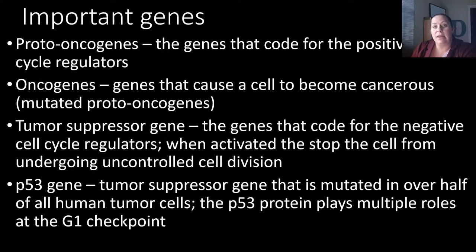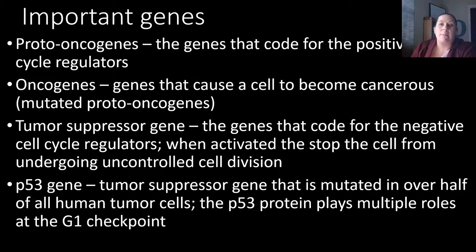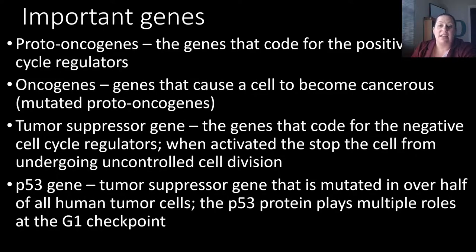There are also tumor suppressor genes that code for negative cell cycle regulators. When activated, they stop the cell cycle from undergoing uncontrolled cell division — like stop signs saying the cell is too damaged, it needs to undergo apoptosis rather than keep dividing. The problem is if these genes are mutated, they're not going to stop the process. P53 is one gene we've identified as a tumor suppressor that gets mutated, and it's mutated in over half of all human tumor cells researched. The P53 protein plays multiple roles at the G1 checkpoint; if it's not working properly, cells blow past that checkpoint and just keep dividing, creating tumors where cancer spreads quickly.